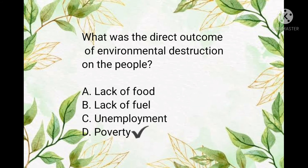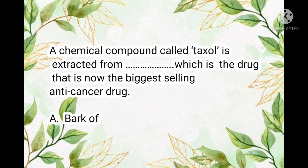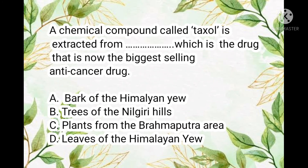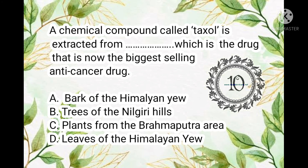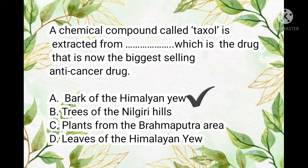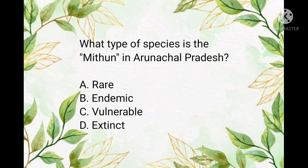The answer is poverty. Question number twenty-two: a chemical compound called taxol is extracted from which plant? It is the drug that is now the biggest selling anti-cancer drug. The correct answer is yew of the Himalayas.